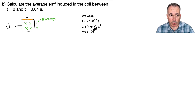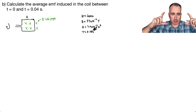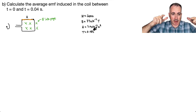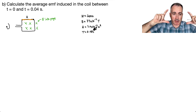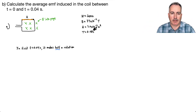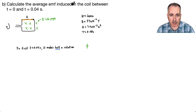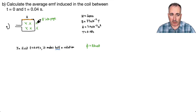The full rotation is 0.08 seconds, so from T equals 0 to T equals 0.04, it's only going to rotate half a full turn — it hasn't gone all the way around, just half. We can look at the magnetic flux, because we're going to need that for the induced EMF.